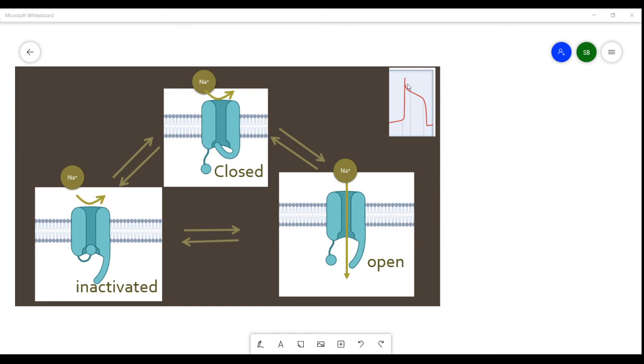That explains the first part of the repolarization here. As sodium channels close, the rest of the shoulder is due to calcium channels.